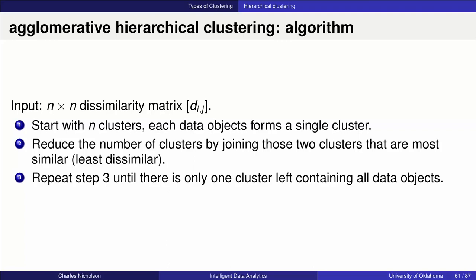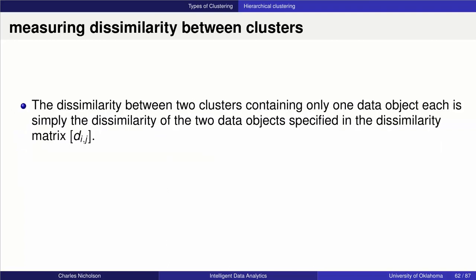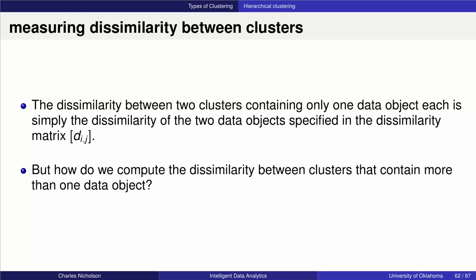You repeat this process over and over again. Each time you perform it, you have to recalculate the distance between the resulting clusters and the data points in other clusters around them. The distance between two clusters containing only one data object is very easy — it's just the dissimilarity of the two objects specified in the matrix. However, computing the dissimilarity between clusters containing more than one data object is more complex.